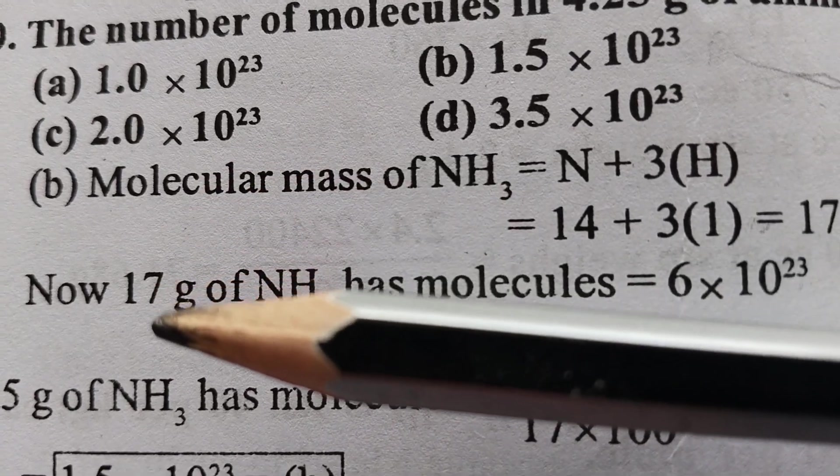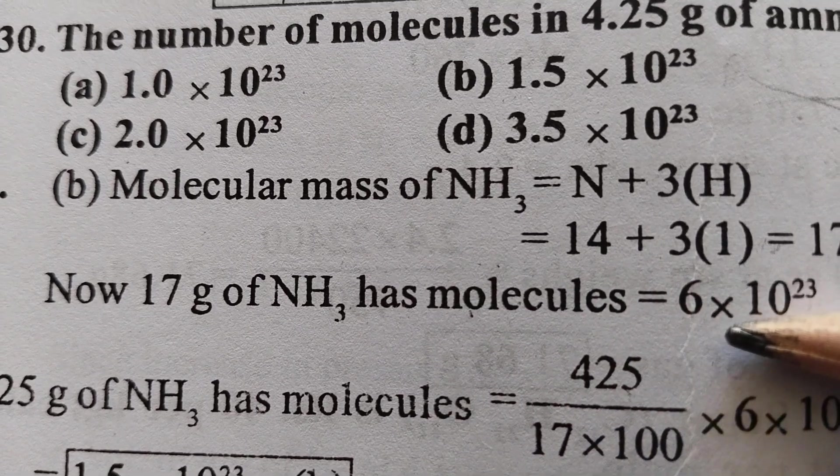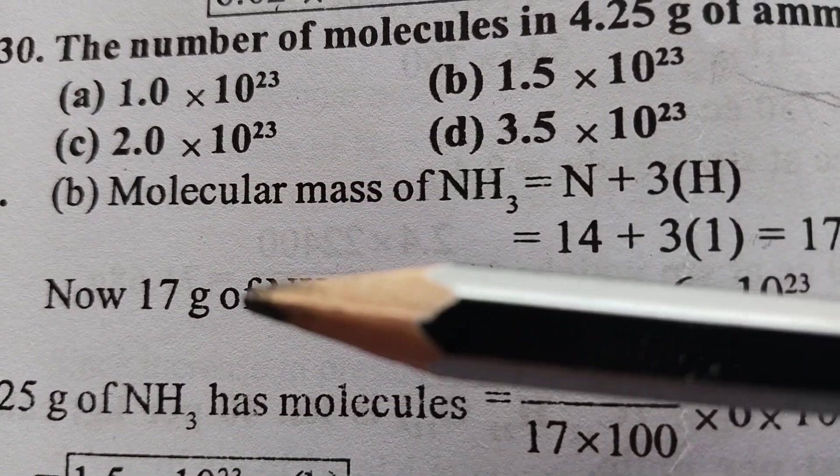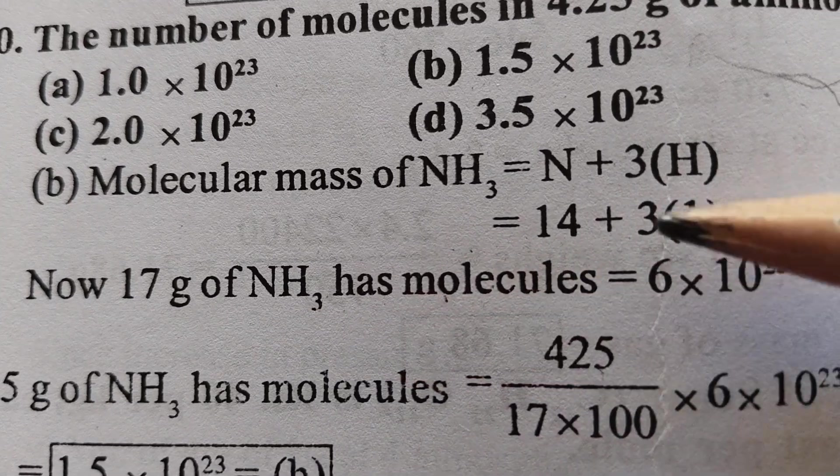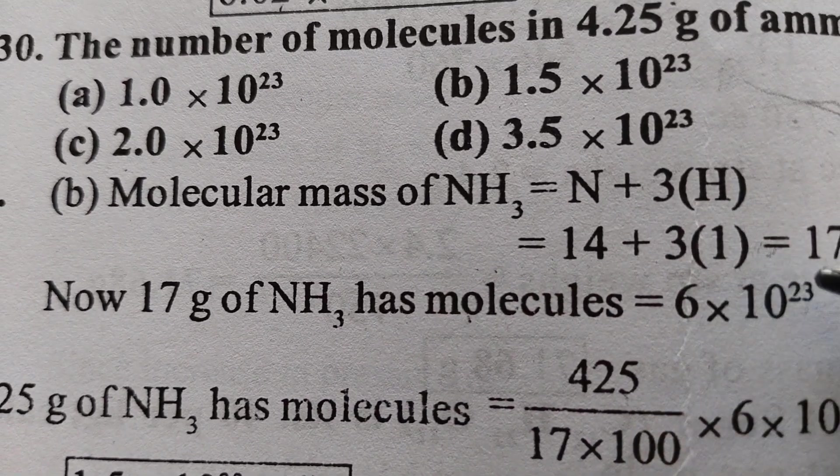Now a very common phenomenon: 17 grams of ammonia has molecules—how much? If you know the molecular mass or molar mass, the number of molecules are constant. That is Avogadro's number, that is 6 × 10²³.